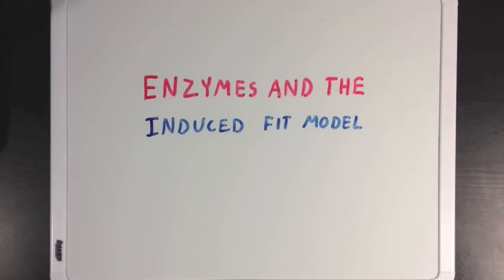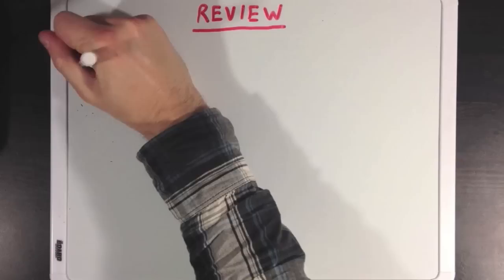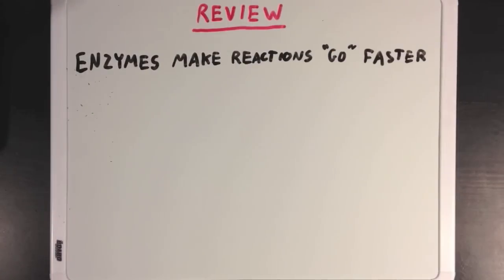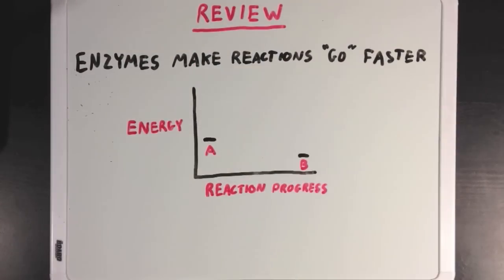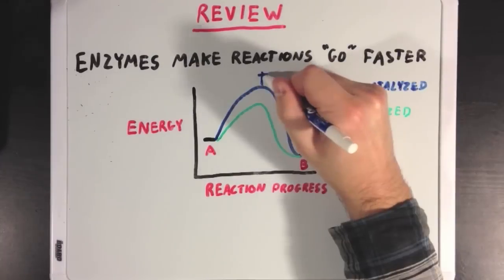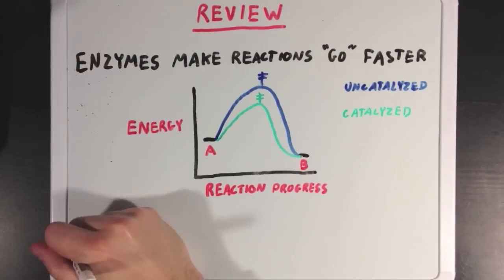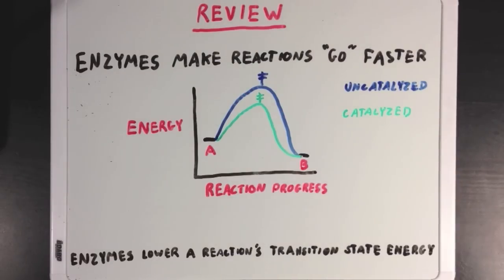Today I'm going to talk about the induced fit model of enzyme catalysis, and how this concept can tell us a lot about how enzymes work. Before we do that, let's review the idea that enzymes make reactions go faster. On a reaction coordinate diagram, the catalyzed reaction has a much smaller activation energy than the uncatalyzed one, and the energy of the catalyzed reaction's transition state is far lower than the uncatalyzed reaction's transition state.